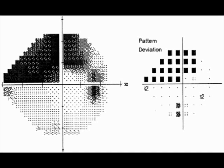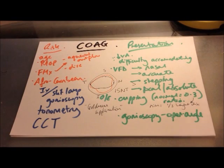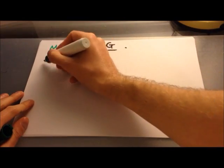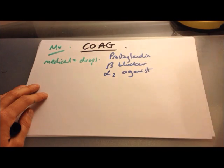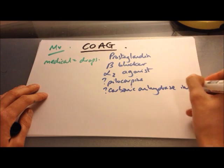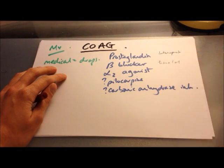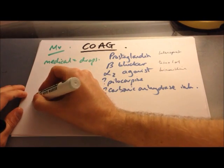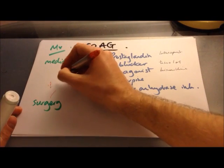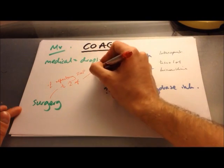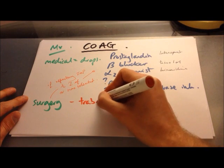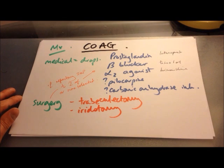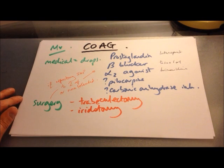Management of chronic open-angle glaucoma begins with eye drops to lower intraocular pressure. Typically start with a prostaglandin such as latanoprost; if that doesn't work, move to a beta blocker such as timolol, an alpha-2 agonist such as brimonidine, pilocarpine (a miotic), or carbonic anhydrase inhibitors. If two medications in combination are ineffective or not tolerated, surgery is considered. Surgical options include trabeculectomy — creating a new drainage canal — or iridotomy, which can be performed with a laser or surgically. Selective laser trabeculoplasty can also be used to increase aqueous outflow through the trabecular meshwork.